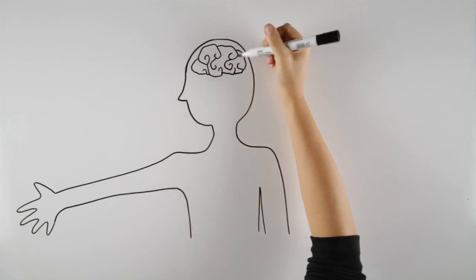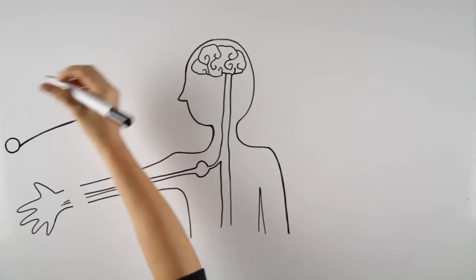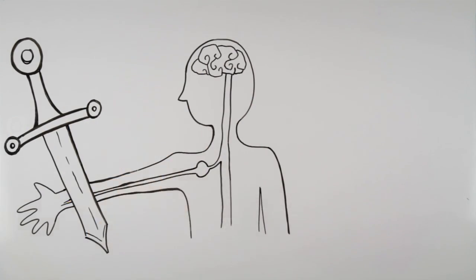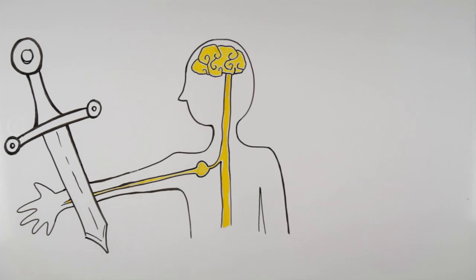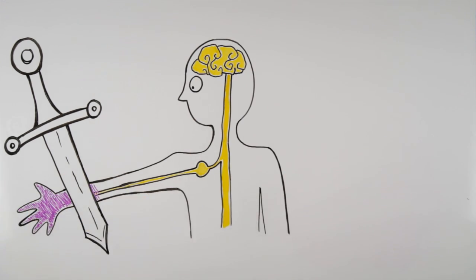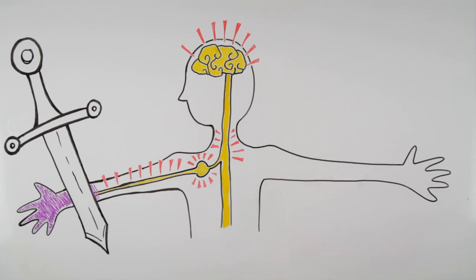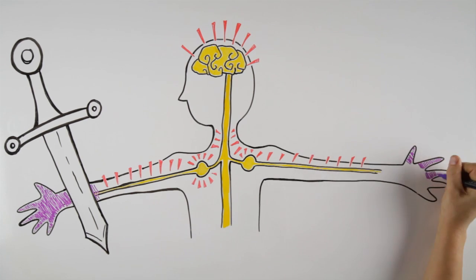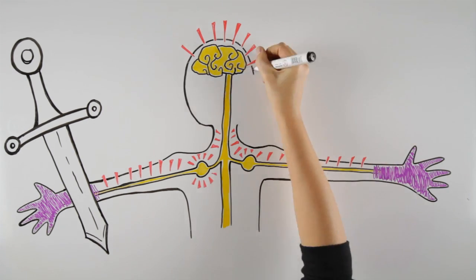It has also been shown that severe nerve injuries may induce neuroinflammation with activation of glial cells at the level of the spinal cord or higher pain centers. This immune inflammation may even spread to contralateral dorsal root ganglia or dorsal horns of the spinal cord, which may then explain the occurrence of mirror pain.